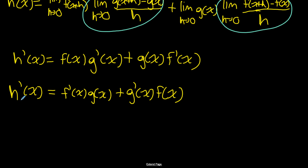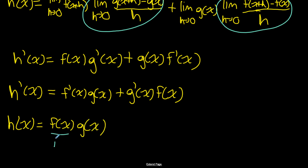Our original function h(x) was f(x) times g(x) — think of f(x) as the first function and g(x) as the second. To differentiate this product: find the derivative of the first function and multiply by the second, plus find the derivative of the second function and multiply by the first. That is the product rule.